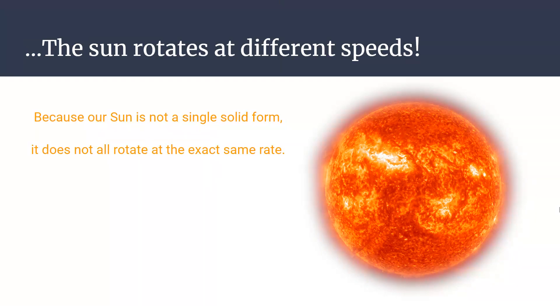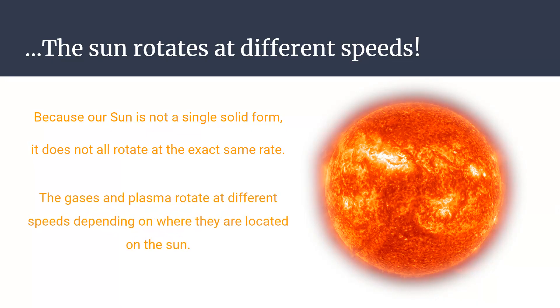And so, the sun rotates at different speeds. Because our sun is not a single solid form, it does not all rotate at the exact same rate. The gases and plasma rotate at different speeds depending on where they are located on the sun.